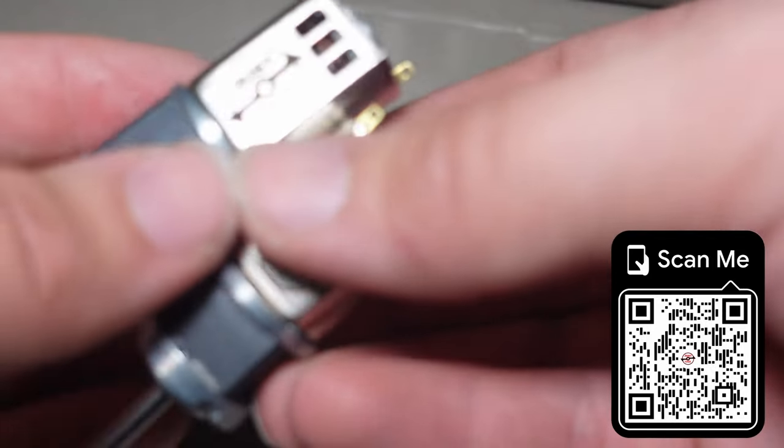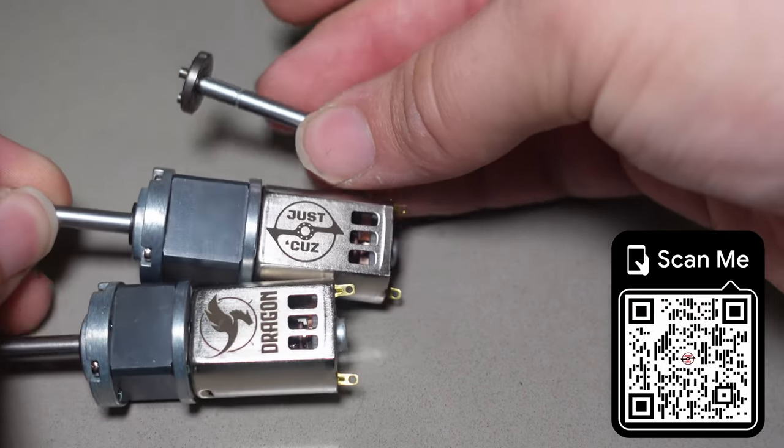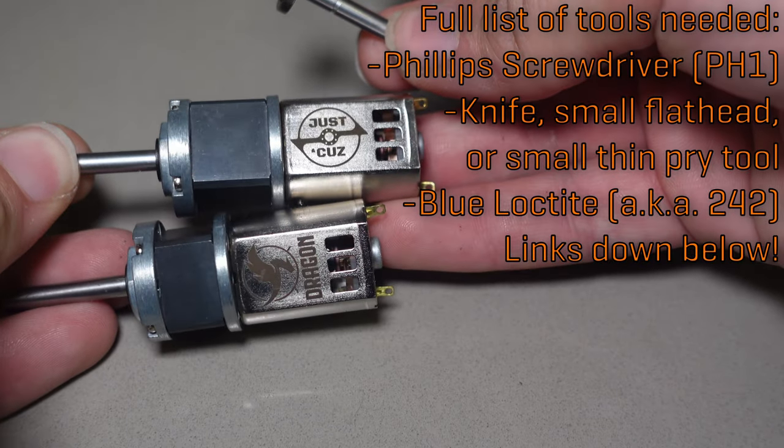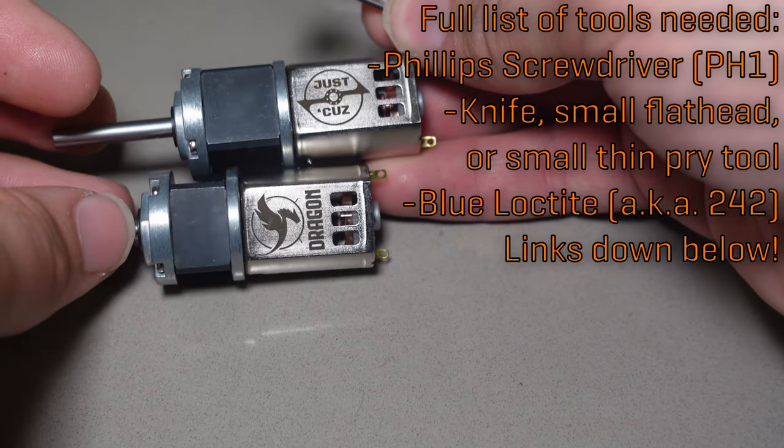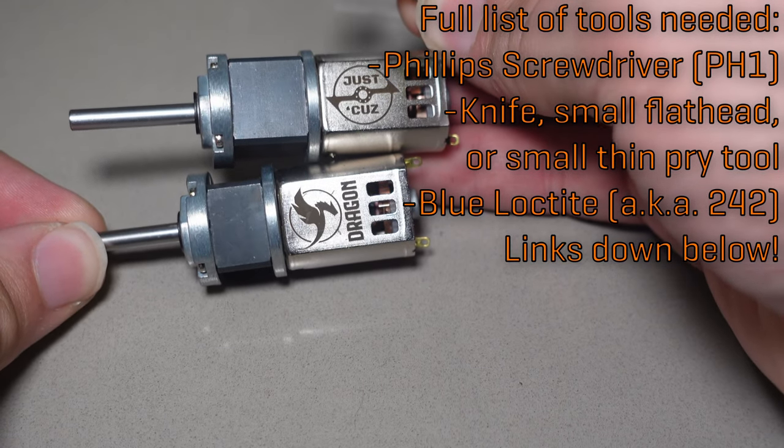Today's video, I want to show how you can replace the shaft on one of these with a replacement shaft, because the shafts on these small gearboxes, not specifically mine, but any 22mm gearbox that has a 4mm shaft especially, is probably the single most likely thing to break.